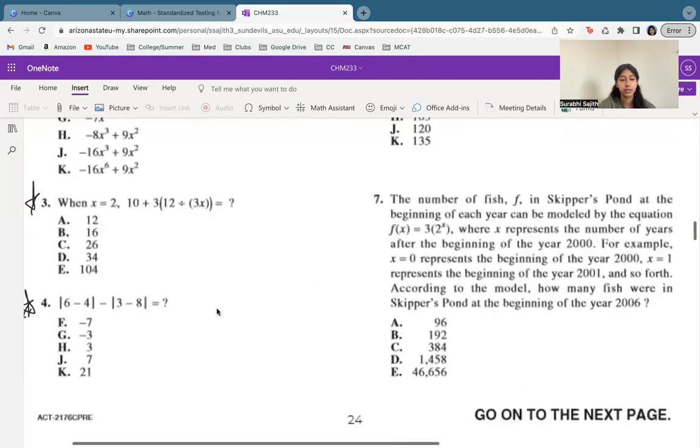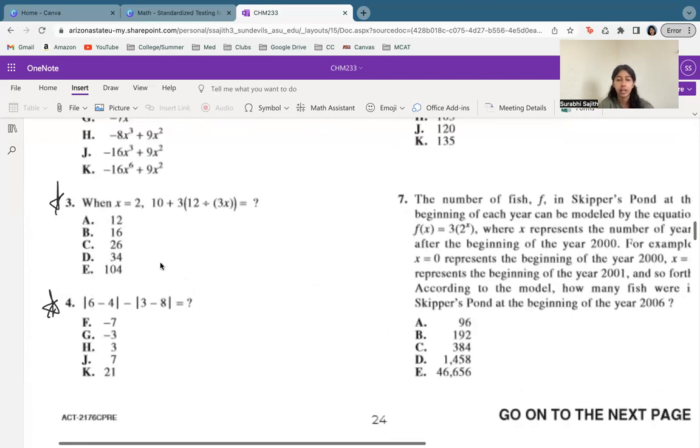We're going to go ahead and jump to 3 and 4 right here. If you are working ahead, just keep in mind that I have some stars next to the ones that we're going to be looking at. So we're looking at number 3 when x equals 2, 10 plus 3(12 divided by 3x) is what? So let's go ahead and plug in x equals 2.